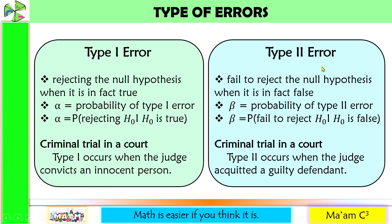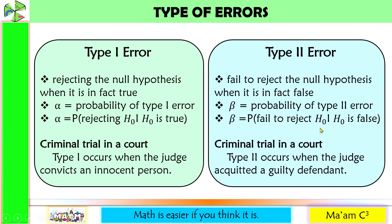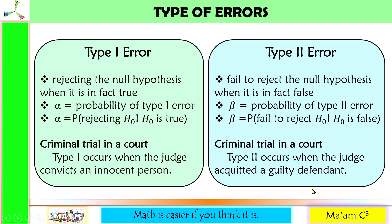Type 2 error is failing to reject the null hypothesis when it is in fact false. It is denoted by beta, the probability of type 2 error — meaning the probability of failing to reject the null hypothesis when in fact it is false. In our example of a criminal trial in court, type 2 occurs when the judge acquits a guilty defendant.